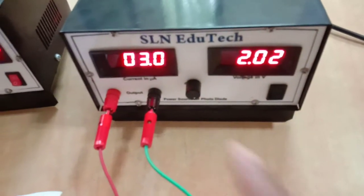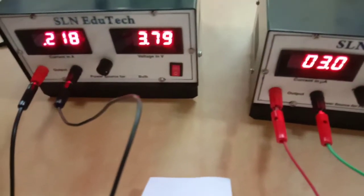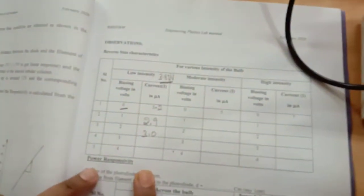So now for 2 volts we are getting 3 microamperes, which I am recording in the table column here. You can look at this: 0 was showing 3.2, for 1 volt 2.9, then for 2 volts it is 3.